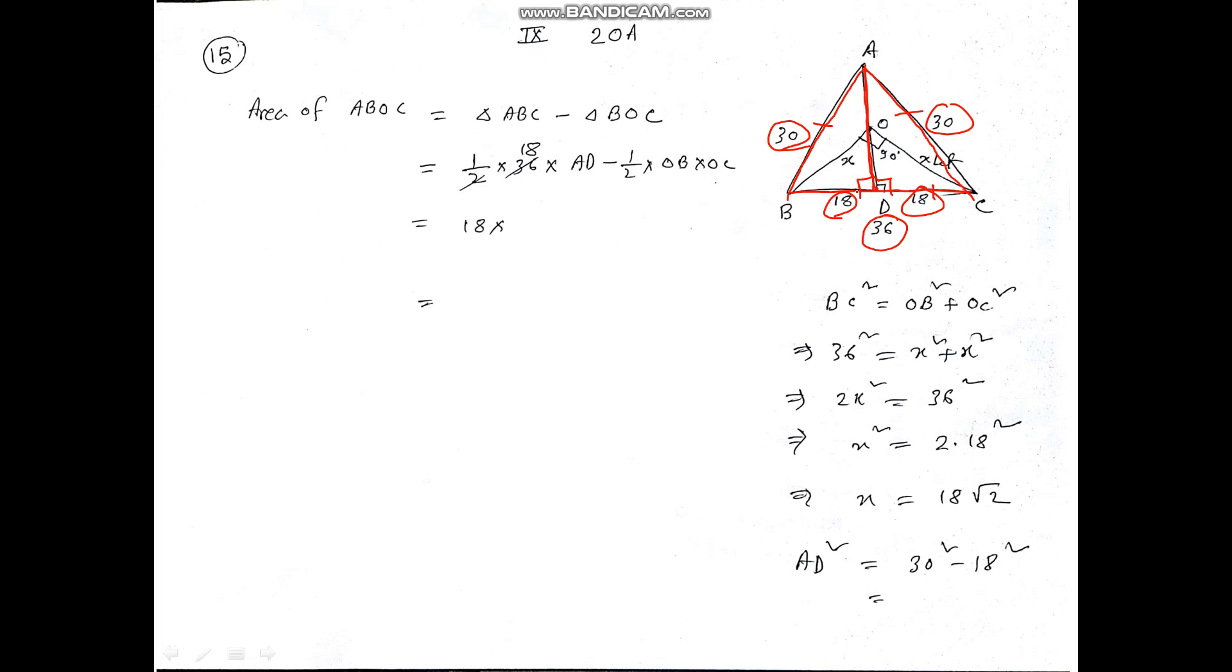It is telling that point O is marked on AD such that angle BOC is equal to 90 degrees, so this angle is 90 degrees. I have considered this side is x and this side also x, since this is an isosceles angle, so this side equals this side.